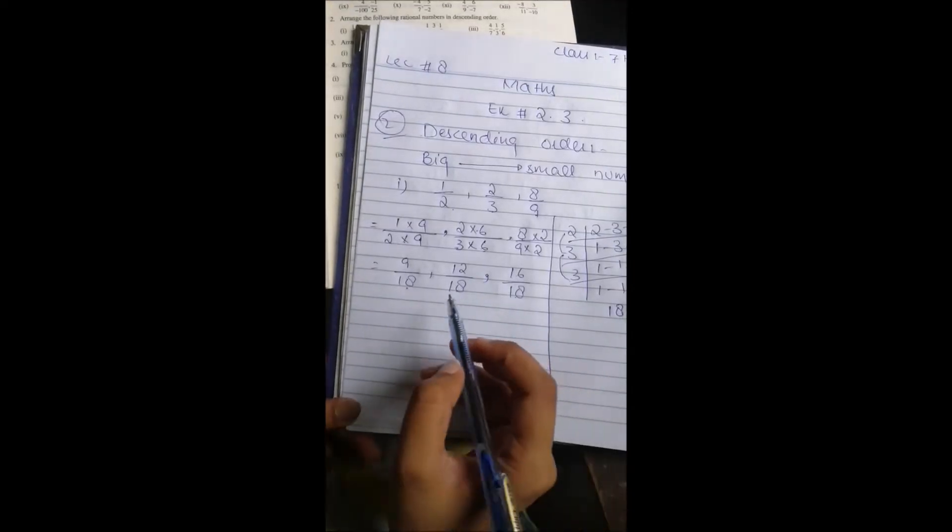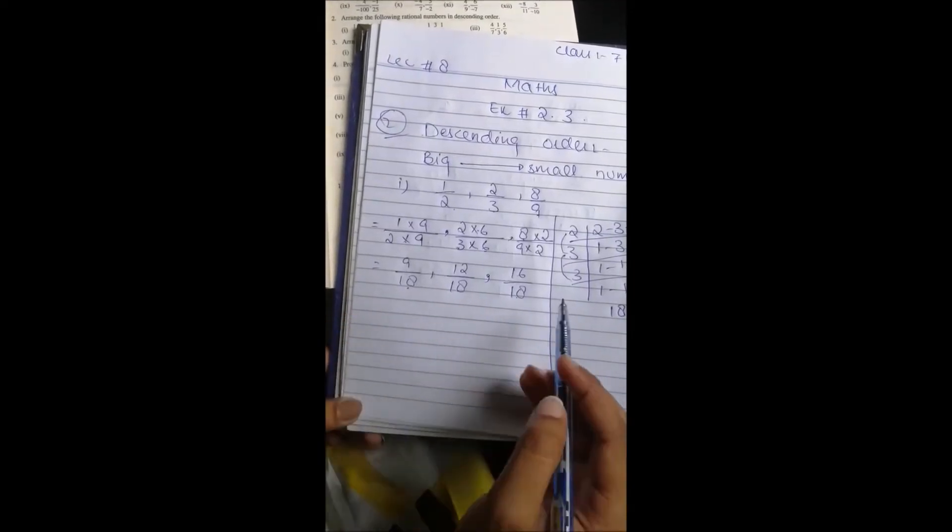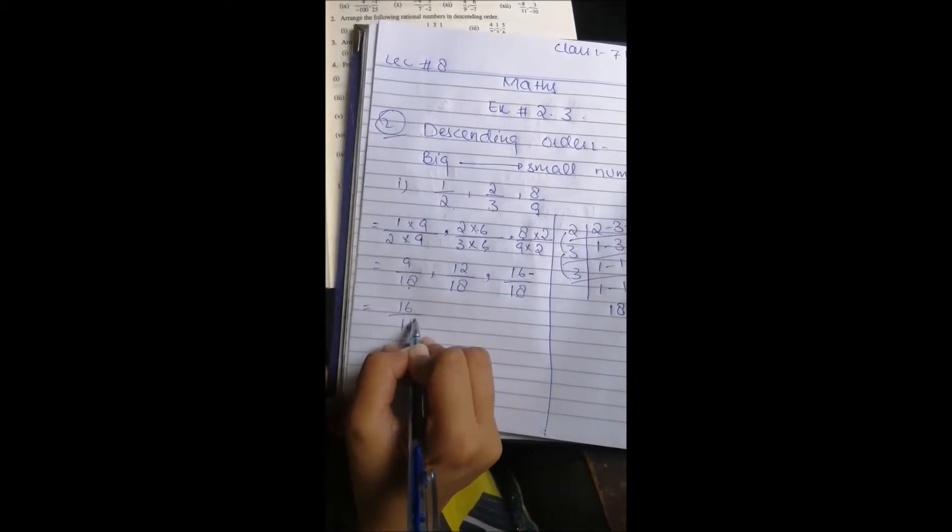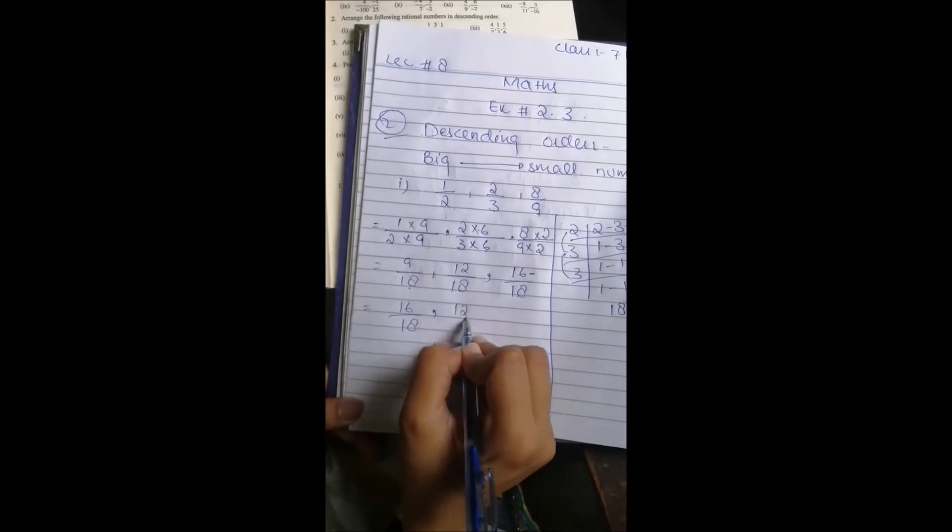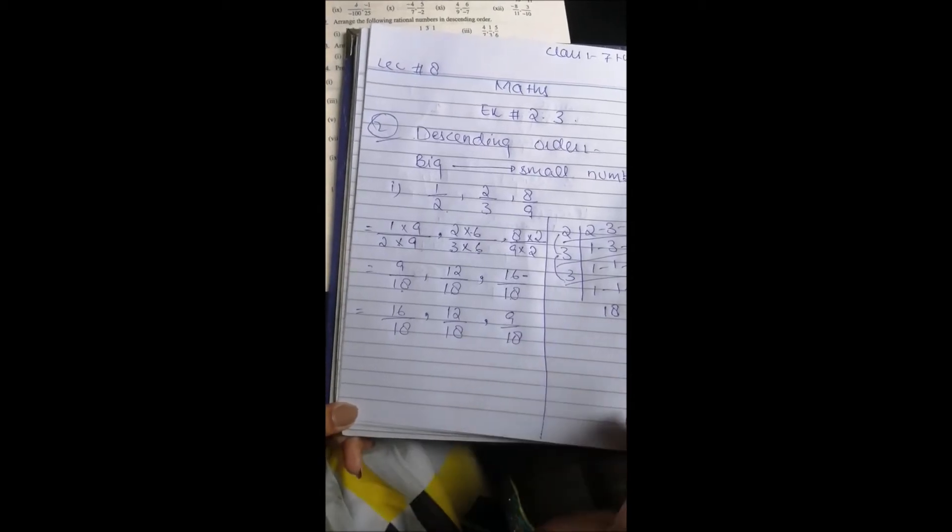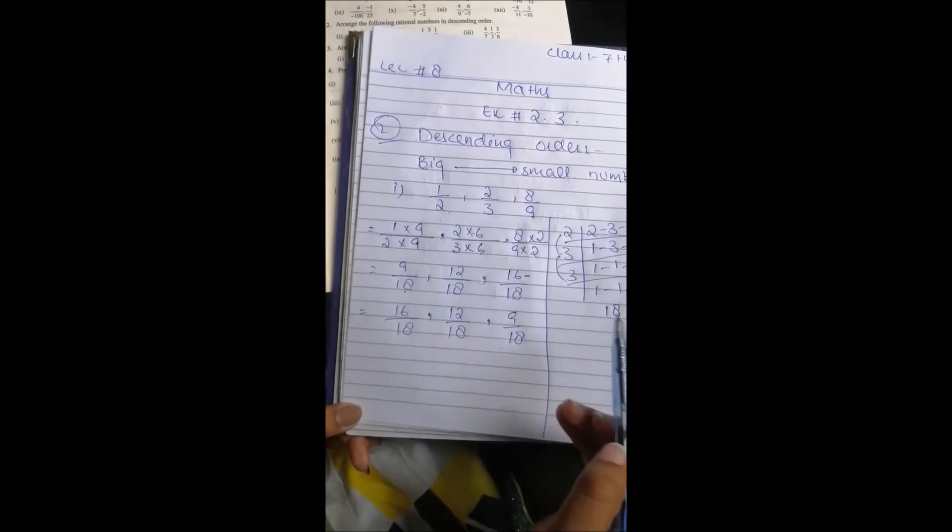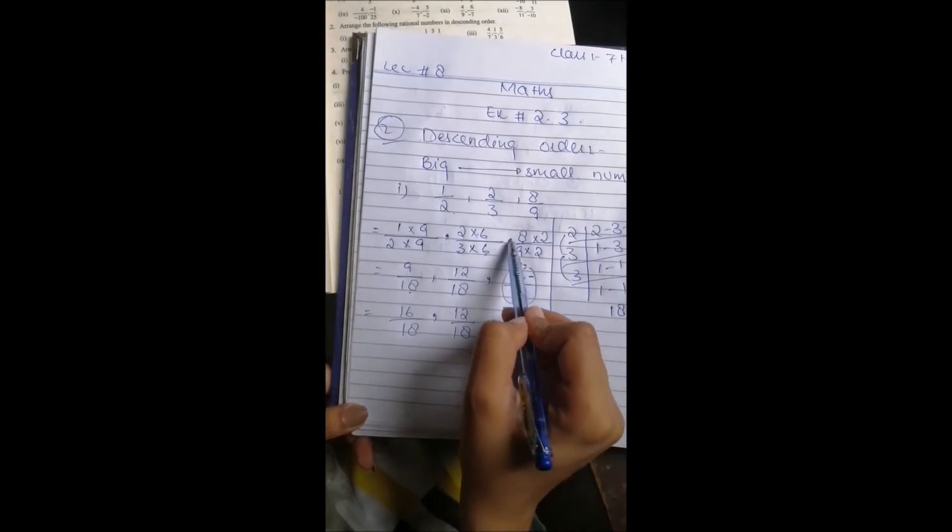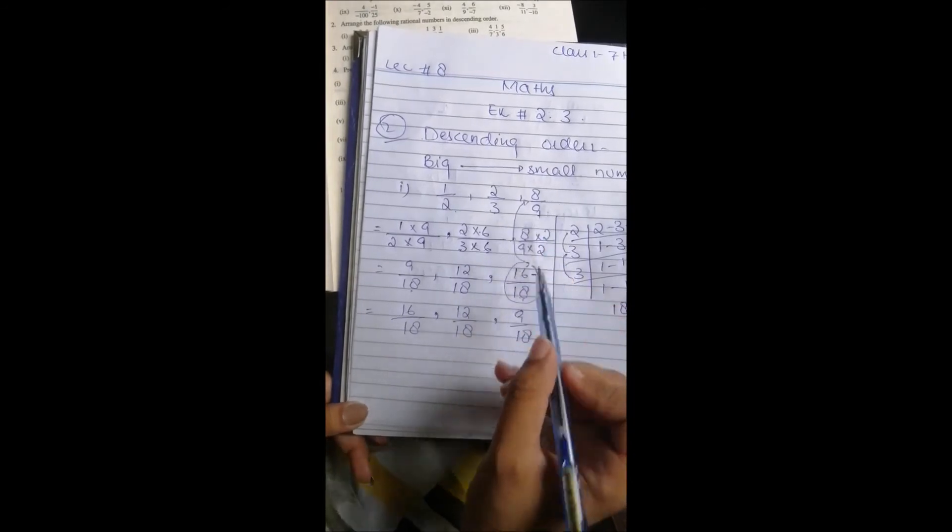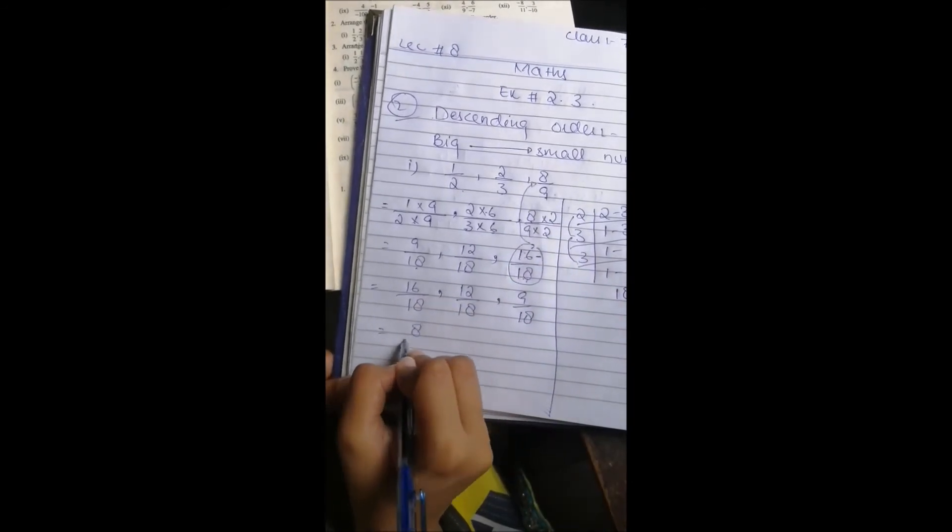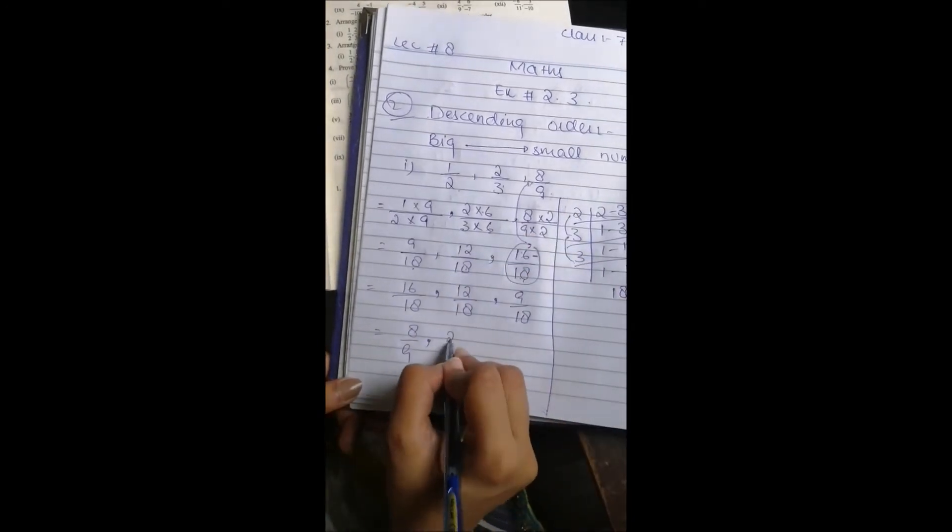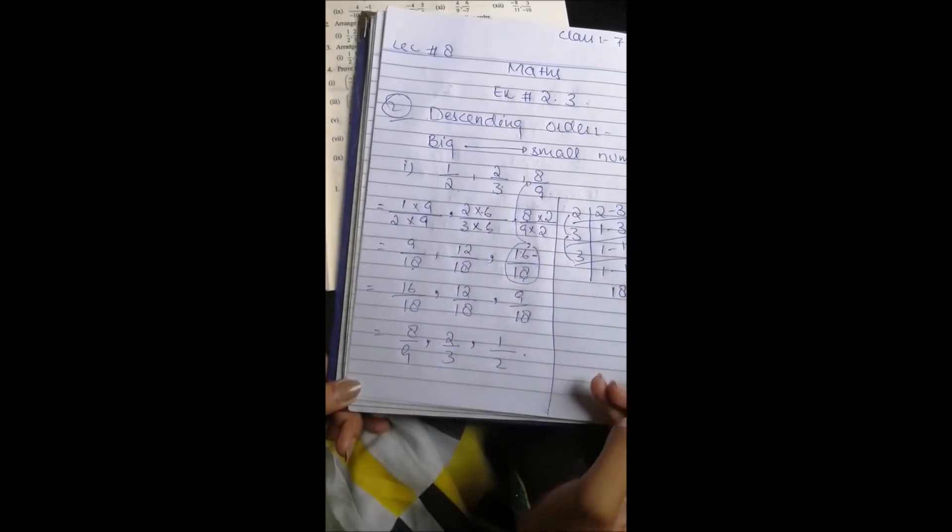Now all the denominators have 18. So you can tell which one is the biggest one. Now the biggest one is 16, then you have 12, and then you have 9. We have arranged it, but you have to do another thing. The original numbers were the first ones, so you have to write the answer. Now the number 16 by 18 was actually 8 by 9, so you will write 8 by 9. Then you will write the value of 12 by 18, which is 2 by 3. Then you will write 1 by 2.